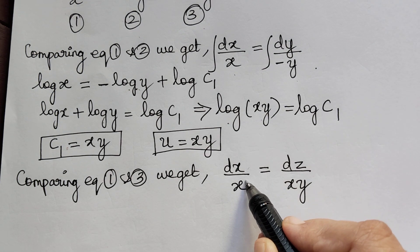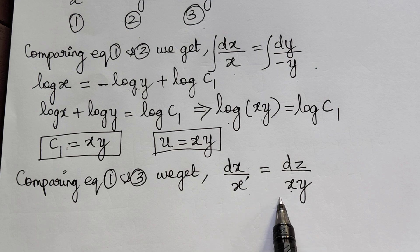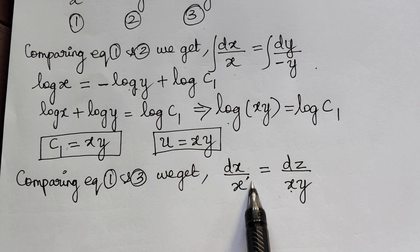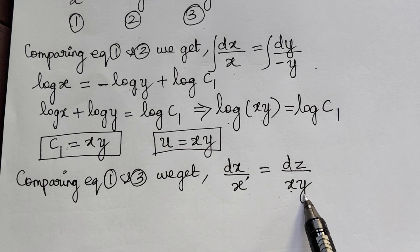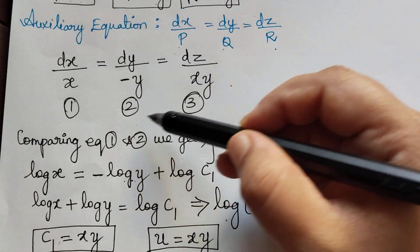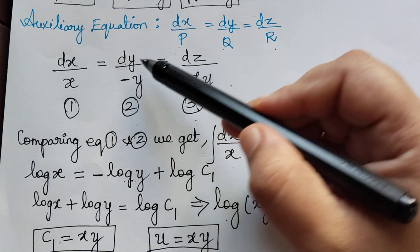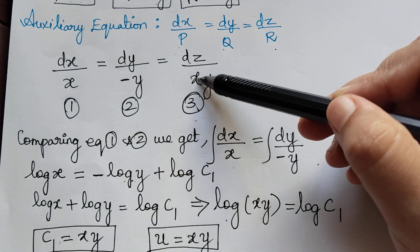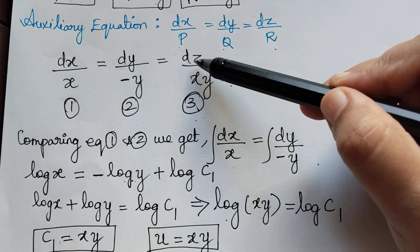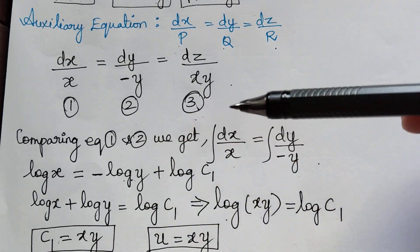We can cancel x on both sides, leaving dx equal to dz by y. We can easily integrate dx, but dz by y cannot be integrated because both variables are different. Comparing equations 2 and 3 also fails — y cancels, leaving negative dy equal to dz by x, and dz by x cannot be integrated either. So we cannot proceed with 1 and 3 or 2 and 3.